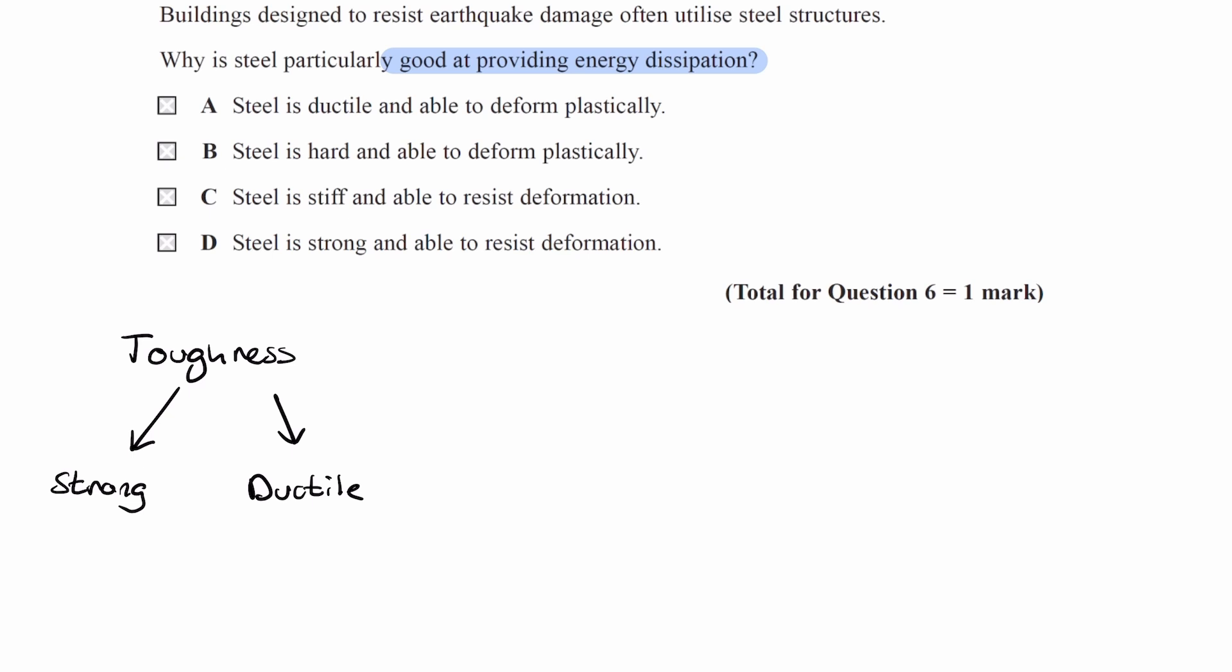If a material is stronger, that means it can withstand more force. A strong material is one which has a high ultimate tensile stress, which is the maximum stress it can withstand before it breaks.